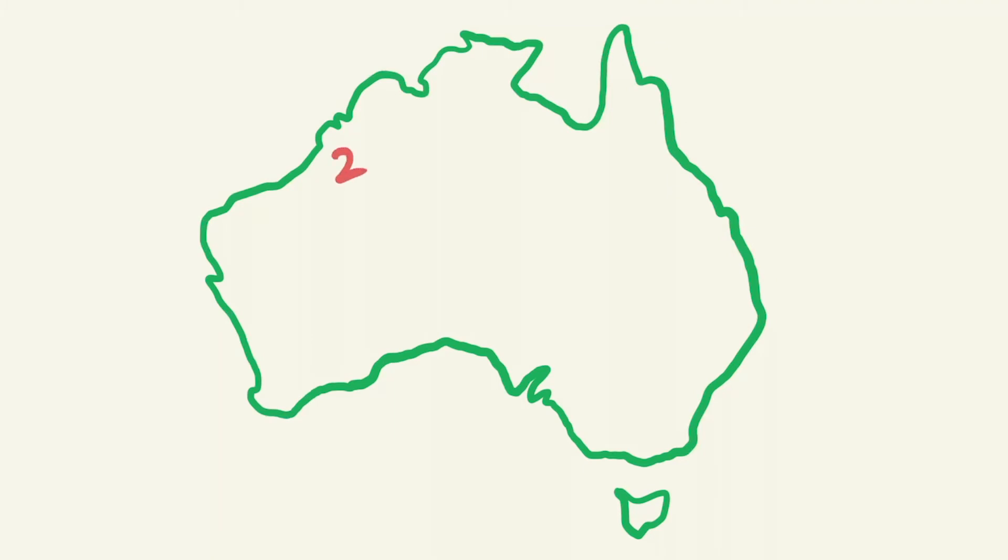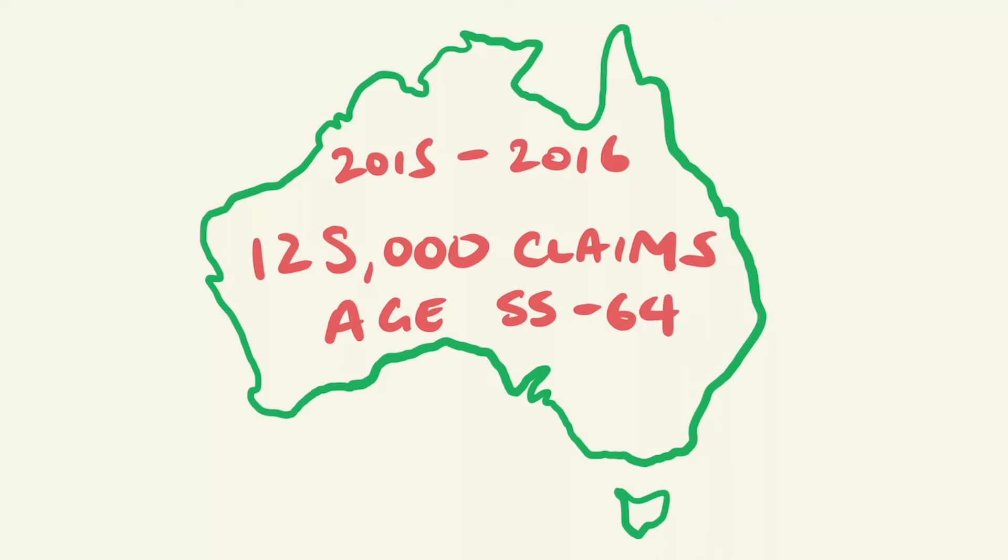A study of workers' compensation claims in Australia from 2015 to 2016 showed that 125,000 of those were work-related MSDs. These affected workers come from all age groups, however the highest rate of serious claims were in the age group of 55 to 64.